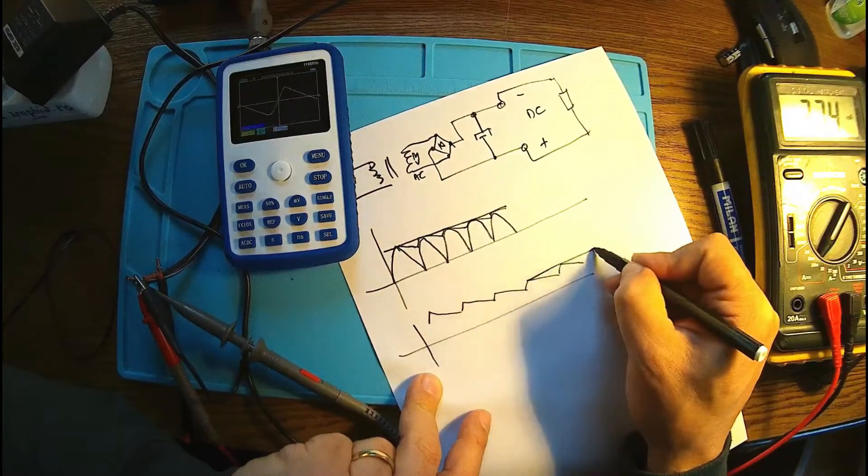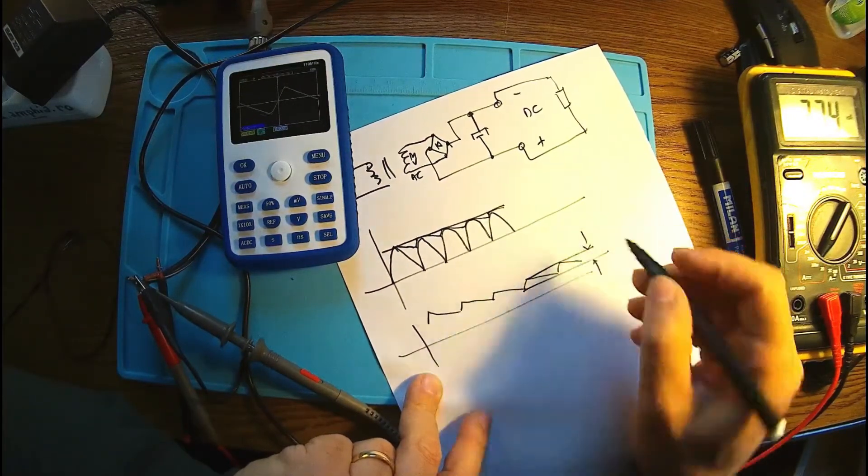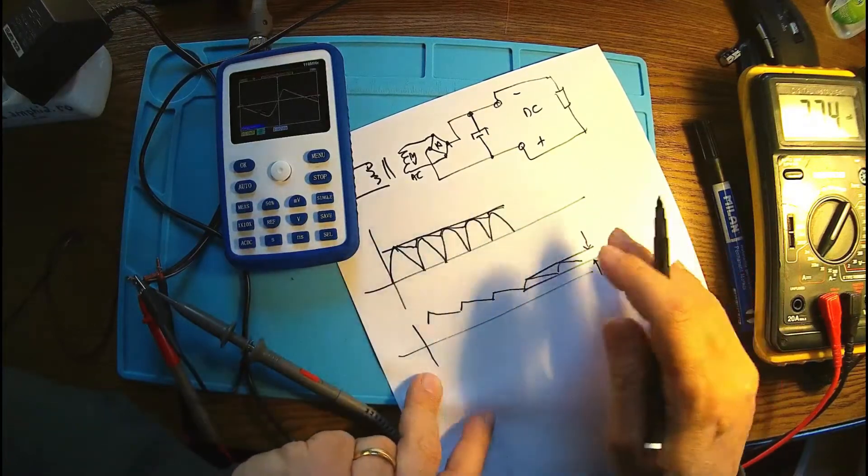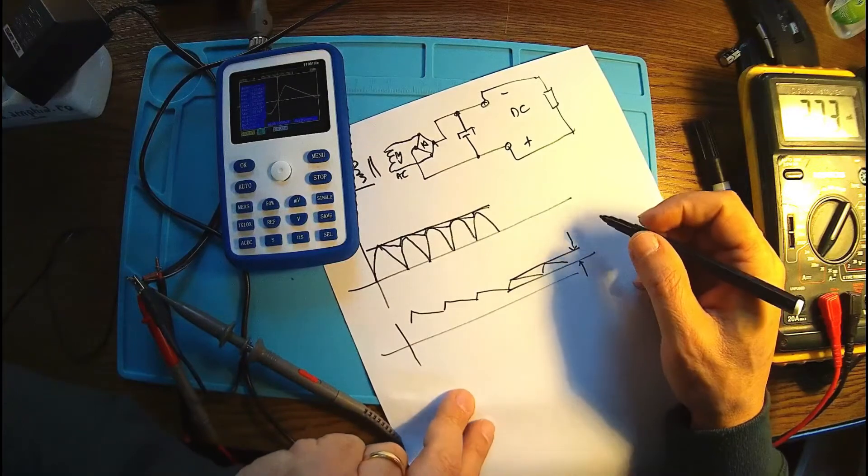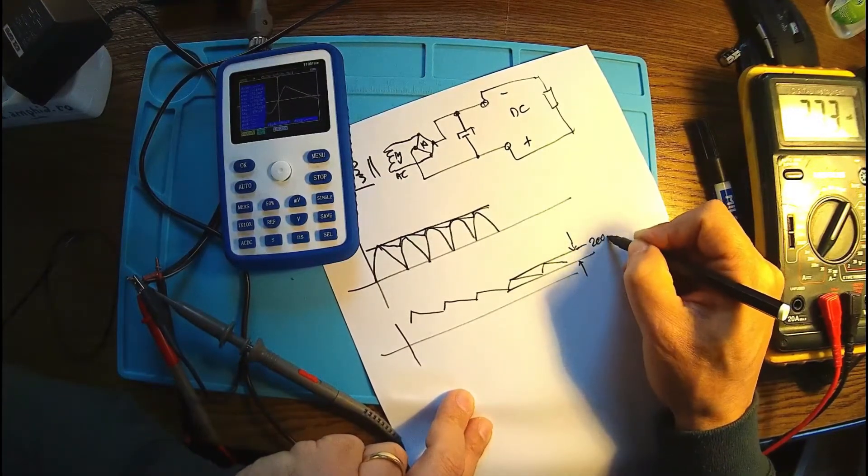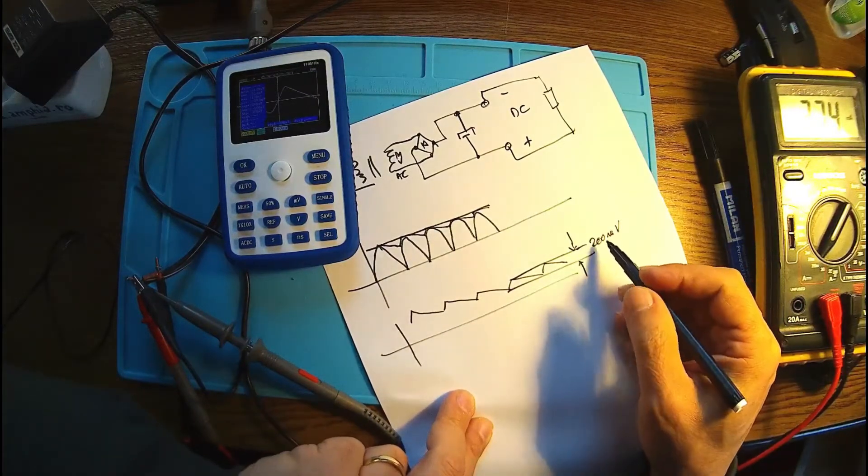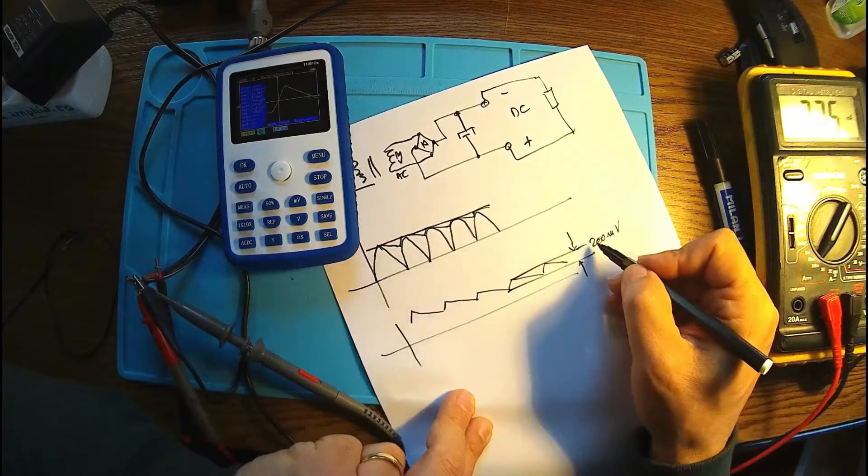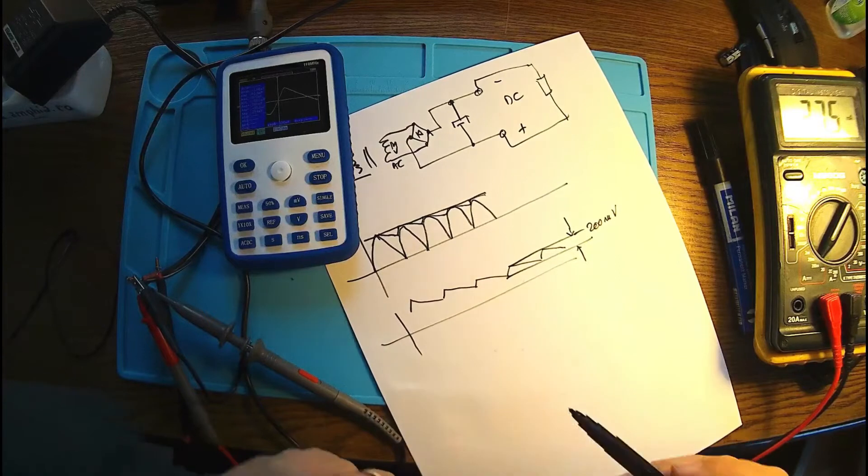Well, the ripple will be exactly this voltage. In our case it's jumping, let's call it 200 millivolts in our case. If we add more capacitance, then it's going down and down. That's the story about measuring ripples.